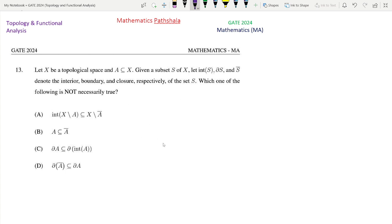Look at the options one by one. See first, we know that A subset of A bar by the definition of closure of A. So we have int A subset of int A bar. So we have the complement of interior A bar is subset of complement of interior A.